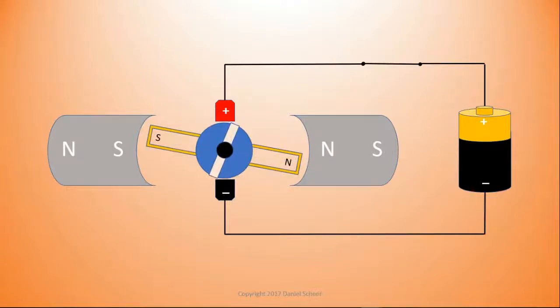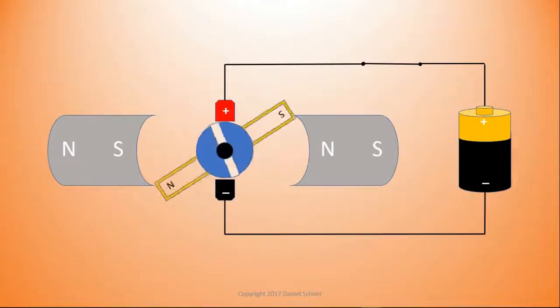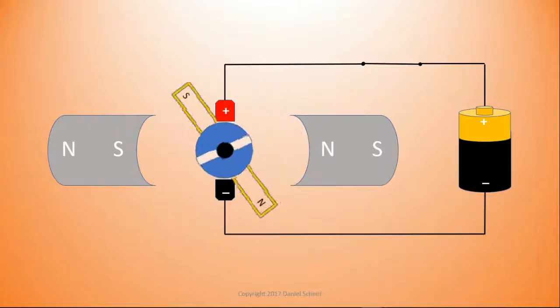For a second there, I wasn't sure we had everything set, but it's working great. Notice how the north and south poles of the electromagnet flip orientation at precisely the right time due to the commutator.